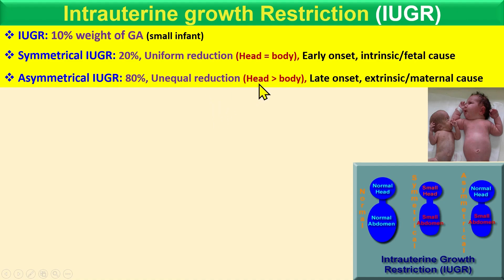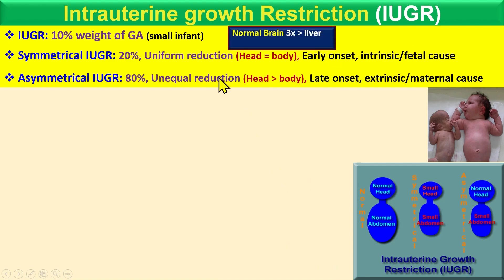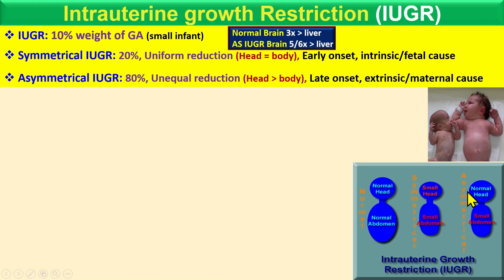In asymmetrical IUGR, the blood supply to the head is intact, so the growth of the head and brain is normal while the body is restricted. This results in a small abdomen, which can be assessed by abdominal circumference. Normally, the brain is about three times larger than the liver, but in asymmetrical IUGR it becomes five to six times larger because the body is restricted while the head grows normally.